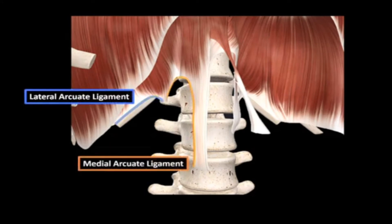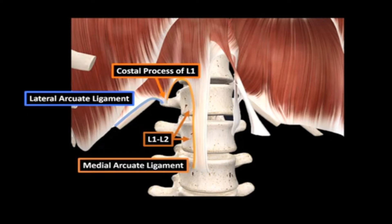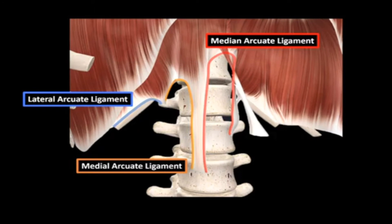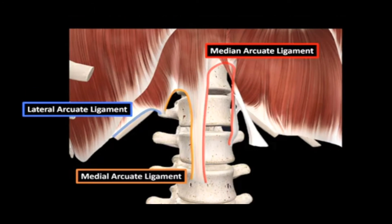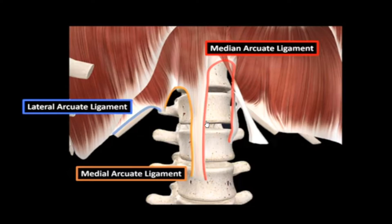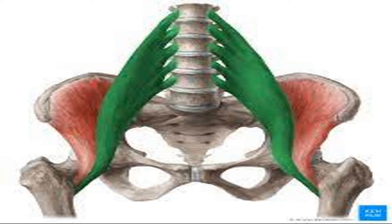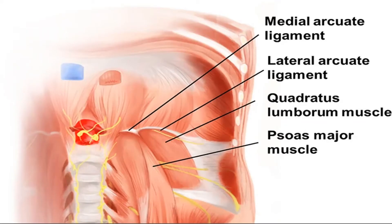The medial arcuate ligament attaches to the bodies of L1 and L2 and the costal process of L1. The lateral arcuate ligament goes from the costal process of L1 to the twelfth rib. The median arcuate ligament passes between the right and left crura. Under the medial arcuate ligament you will find the psoas major muscle, and the aorta runs behind the median arcuate ligament.